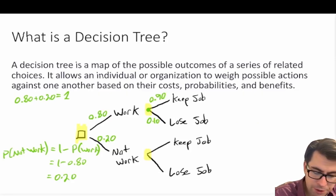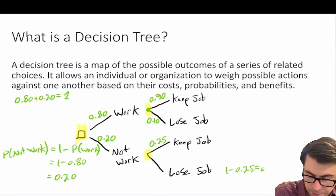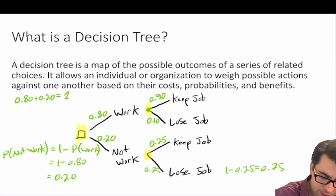From there, if we don't go to work, let's say the probability that you keep your job is 0.25, which means 1 minus 0.25 is equal to 0.75. So there's a 75 percent chance that you lose your job if you don't go to work.